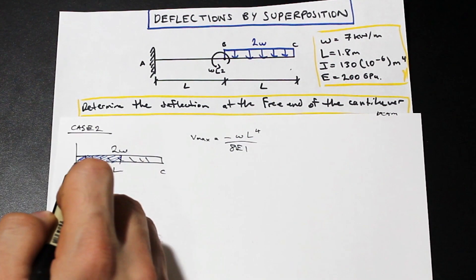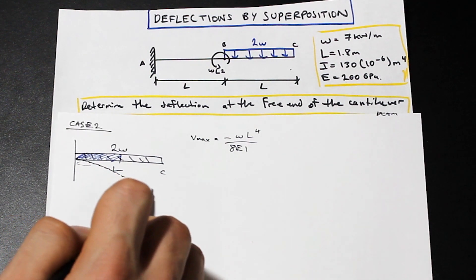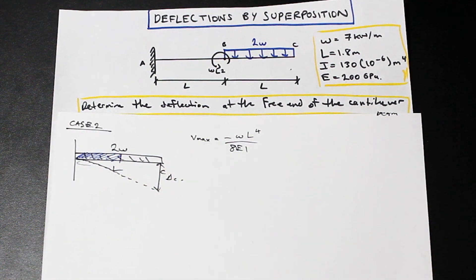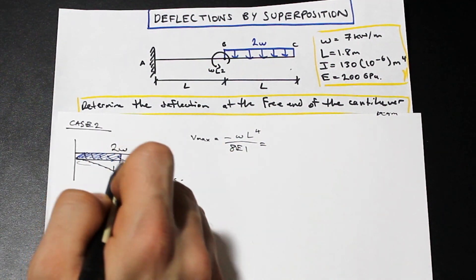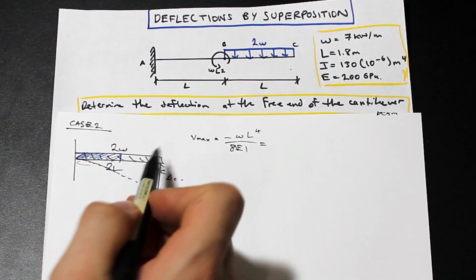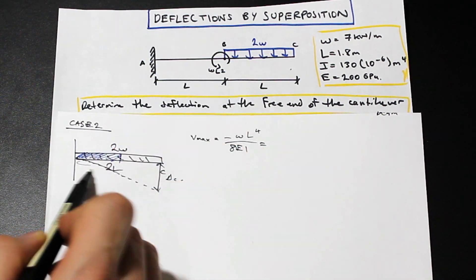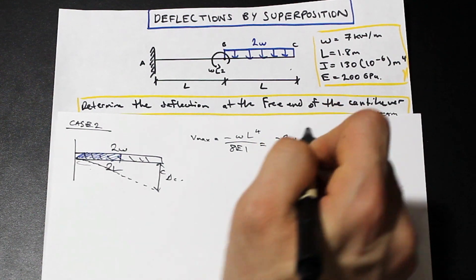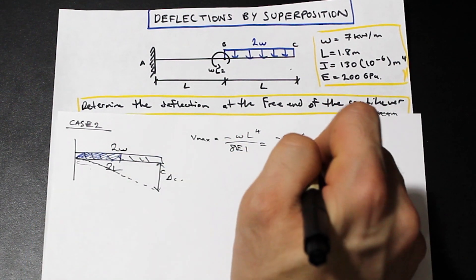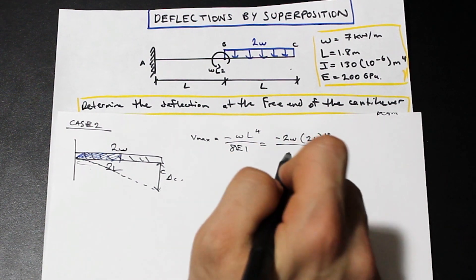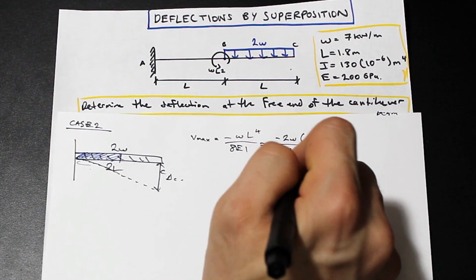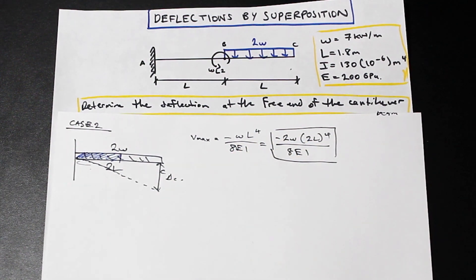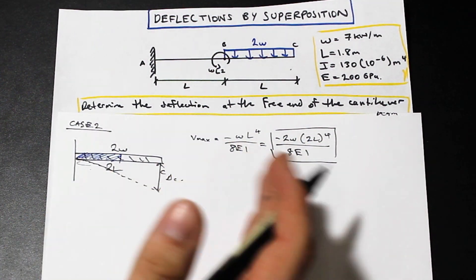First, let's find the deflection at C for this case. I'll draw the elastic curve — we have a deflection delta C. Let's plug in our values. This length is 2L, not L. Our W is 2W and our L is 2L, with 8EI in the denominator. So we've now found the deflection due to the entire distributed load on the beam.